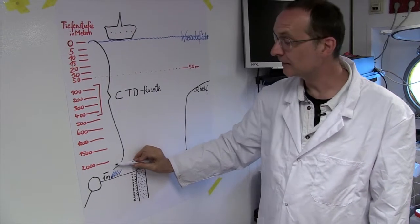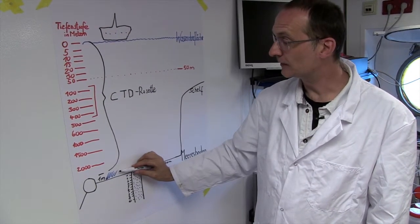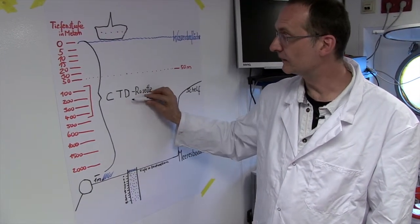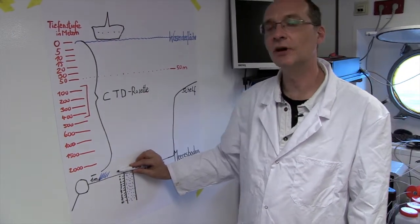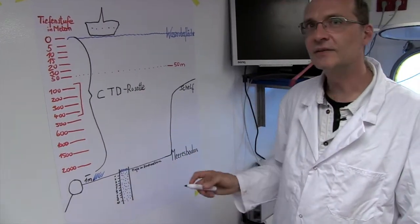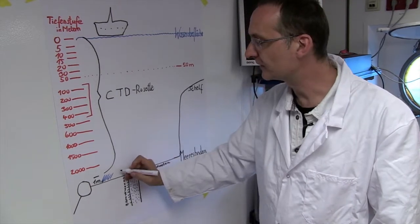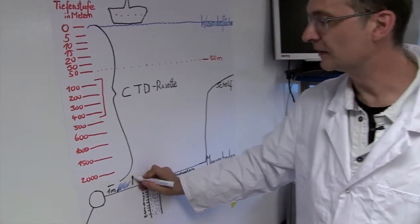The one meter above the seabed presents a problem because the CTD rosette cannot be placed on the seabed. For this, we use a very special device, the bottom water sampler.